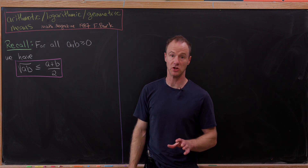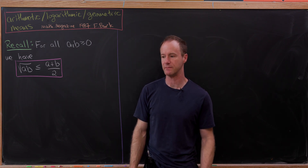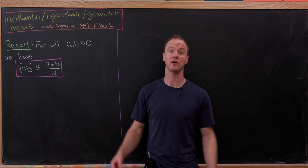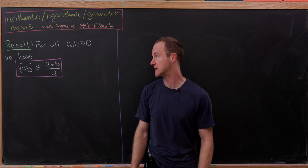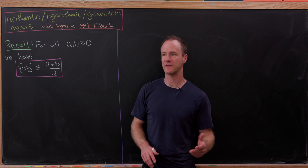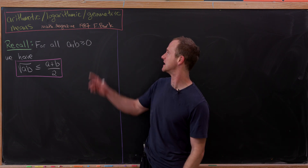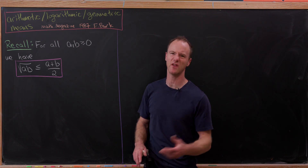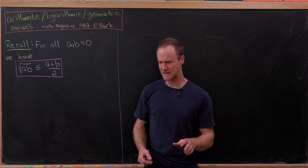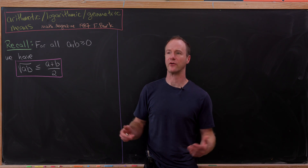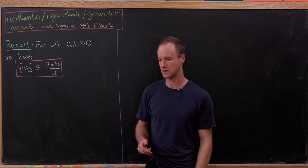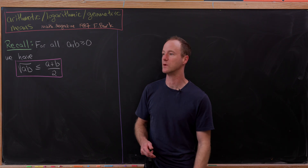Today we're going to explore something called the logarithmic mean, and we're going to see where it fits in the greater inequality of all means. I learned about this from Mathematics Magazine, an issue in 1987, and the article was by Frank Burke. He goes quite a bit further into his discussion about this logarithmic mean inequality than we will.